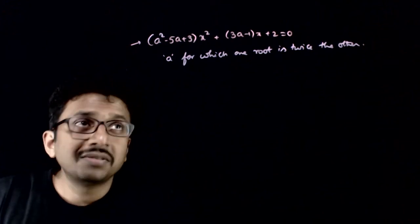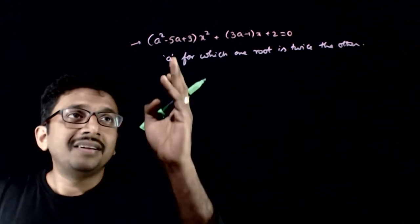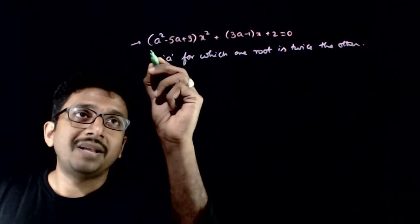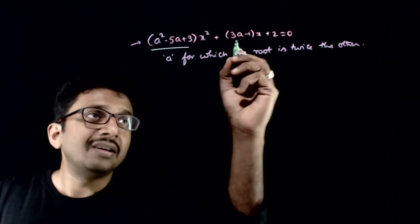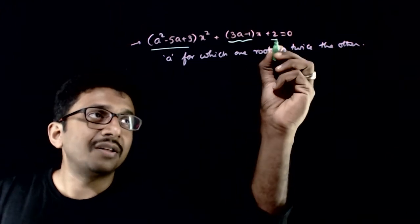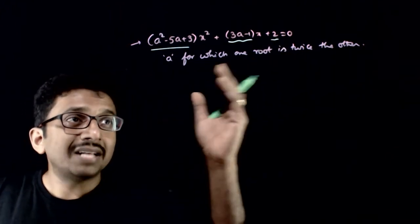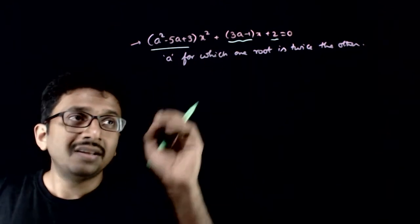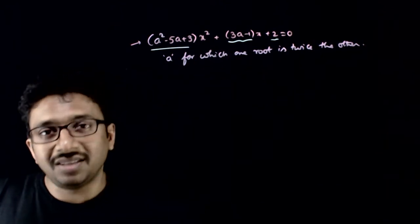Welcome students. In this question, given that I have a quadratic equation (a² - 5a + 3)x², this is the coefficient of x², this is the coefficient of x, and the constant term is 2. You are asked to find the value of a for which one root is twice the other.